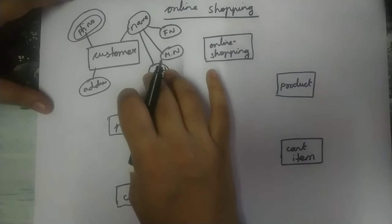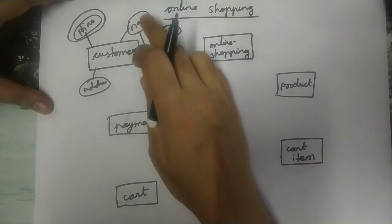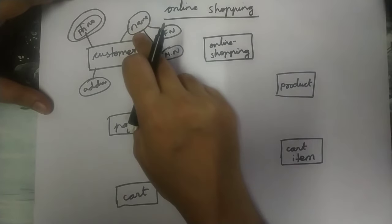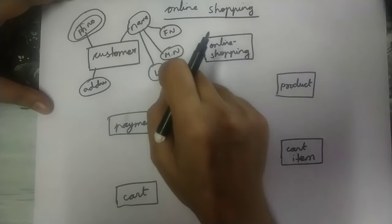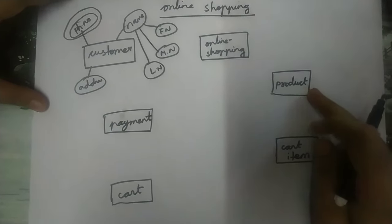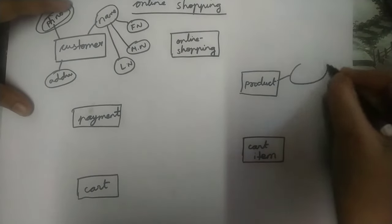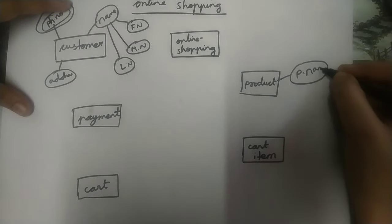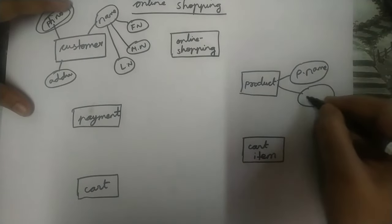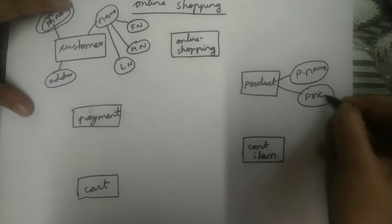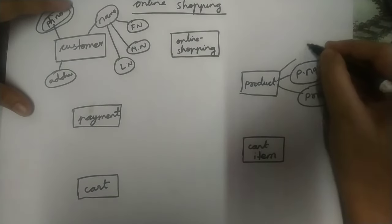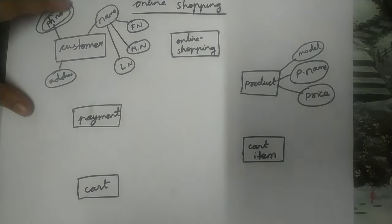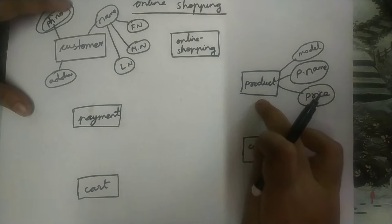This name is a composite attribute because we are able to divide it further as first name, middle name, and last name. Next is the product entity. The product will have some name — that is product name. Next, the product will have some price. Then the model of that product. So these are the attributes for the product entity.